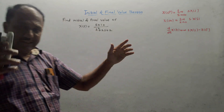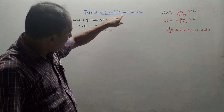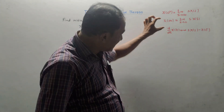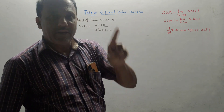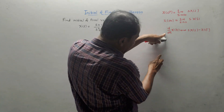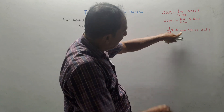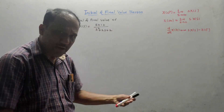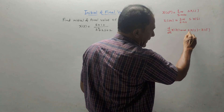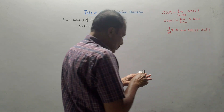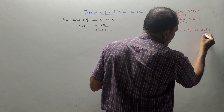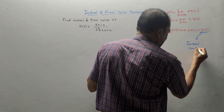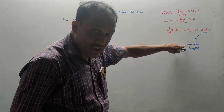As the name indicates, initial value means the starting value of any sequence. Final value means the ending value of that sequence. For this, we need to remember one rule — that is the differential property of the unilateral Laplace transform. The derivative d/dt of x(t), its Laplace transform, if it is a unilateral one-sided Laplace transform, becomes s·X(s) minus x(0⁻). This value x(0⁻) is called the initial condition.